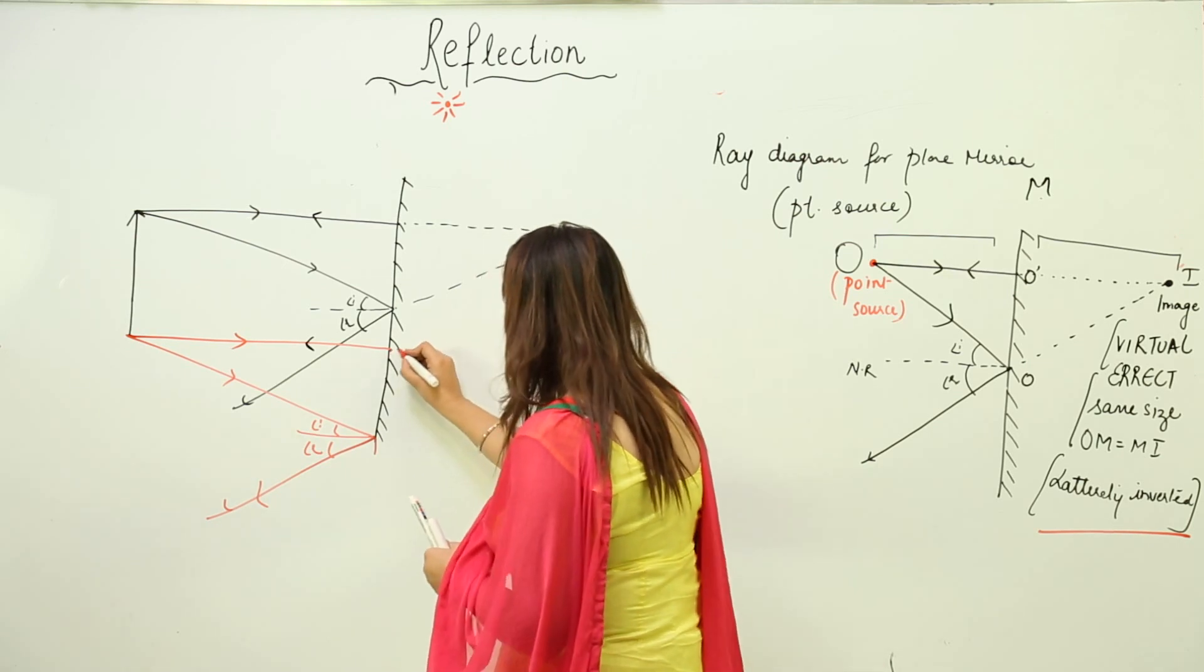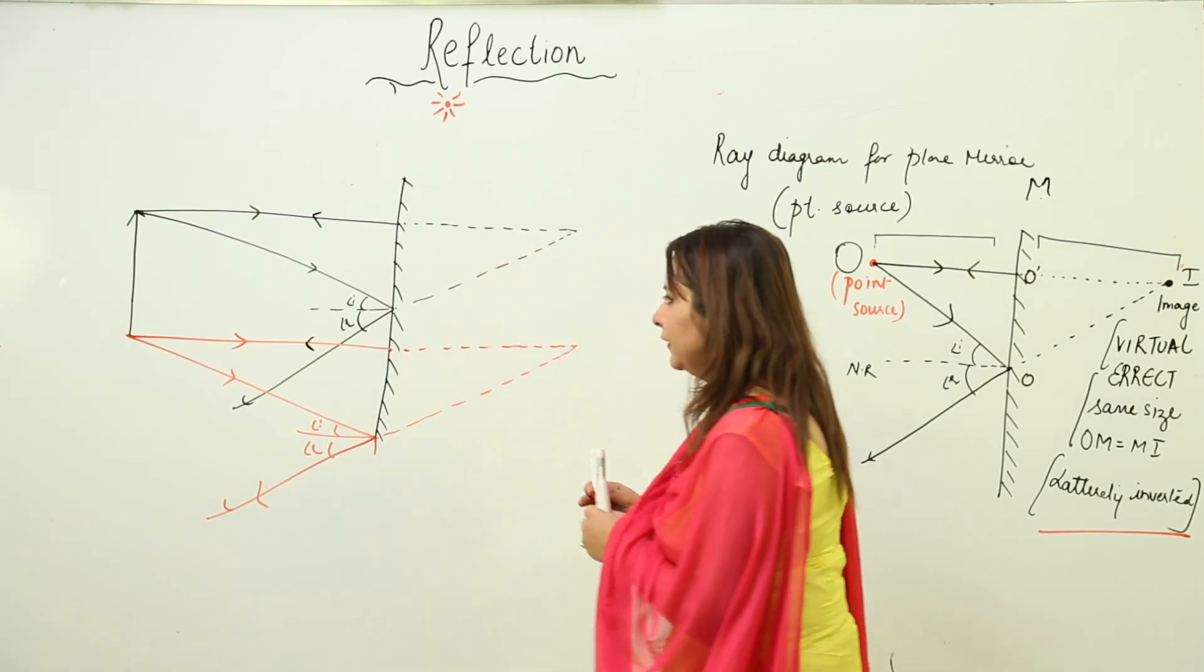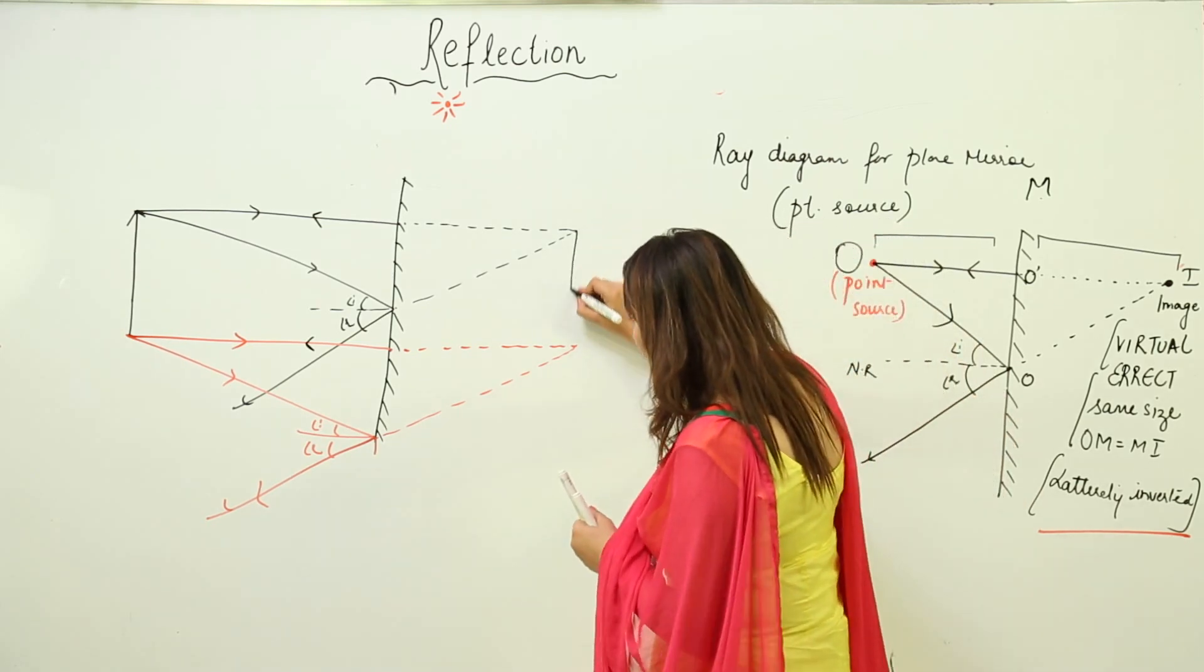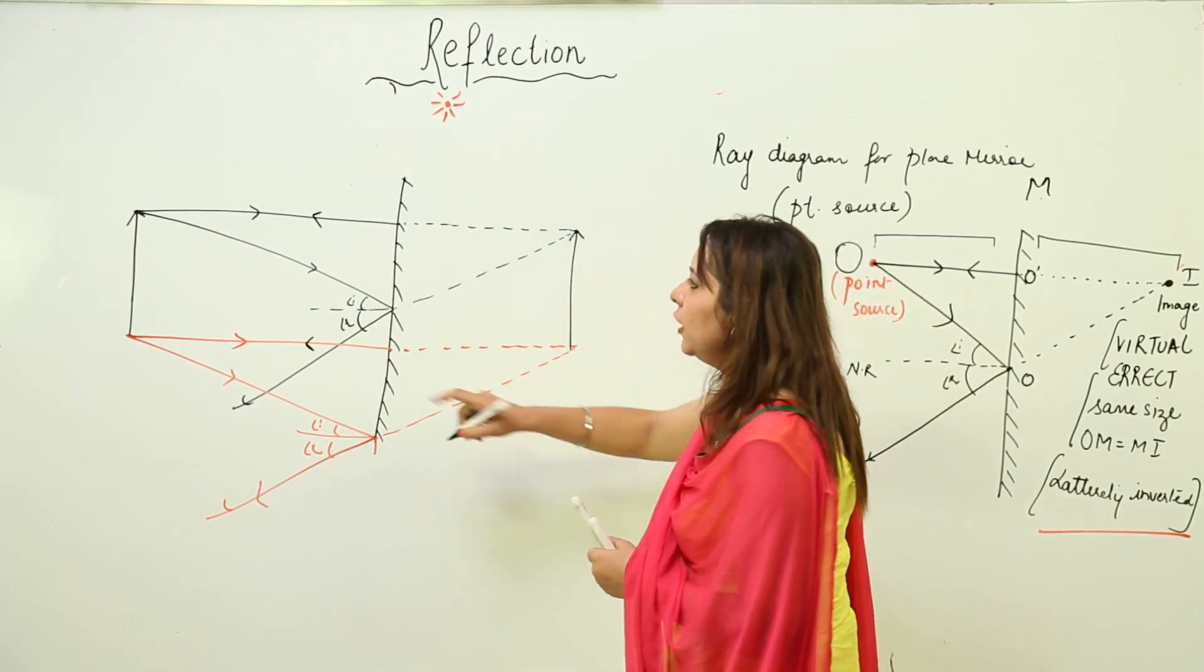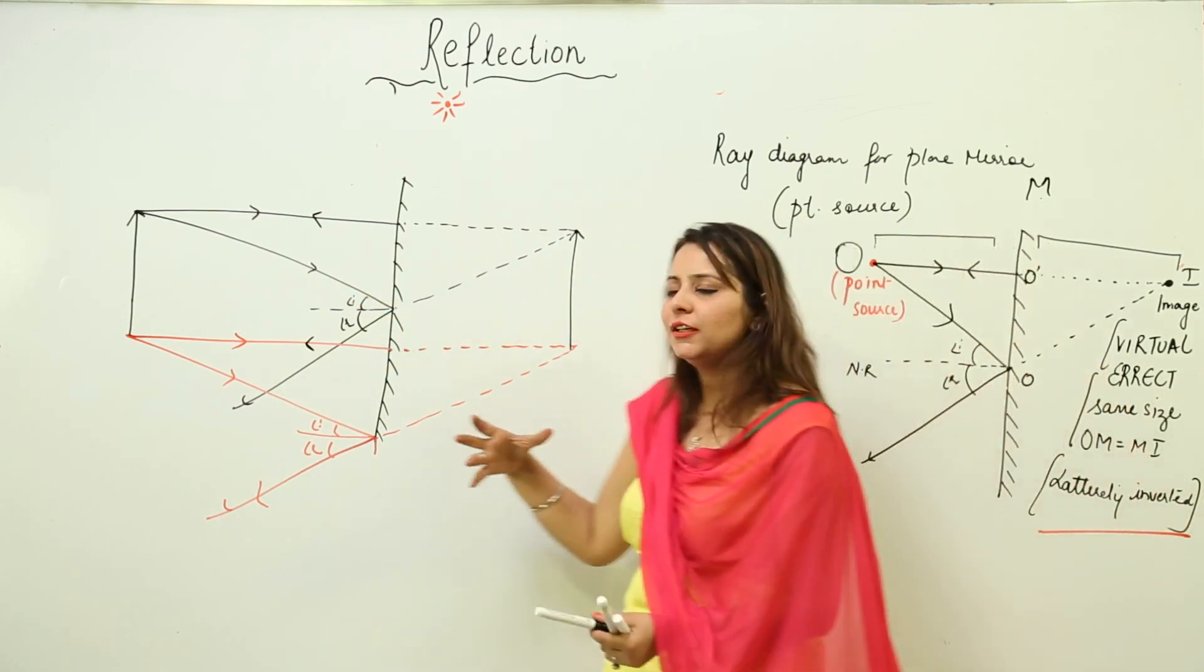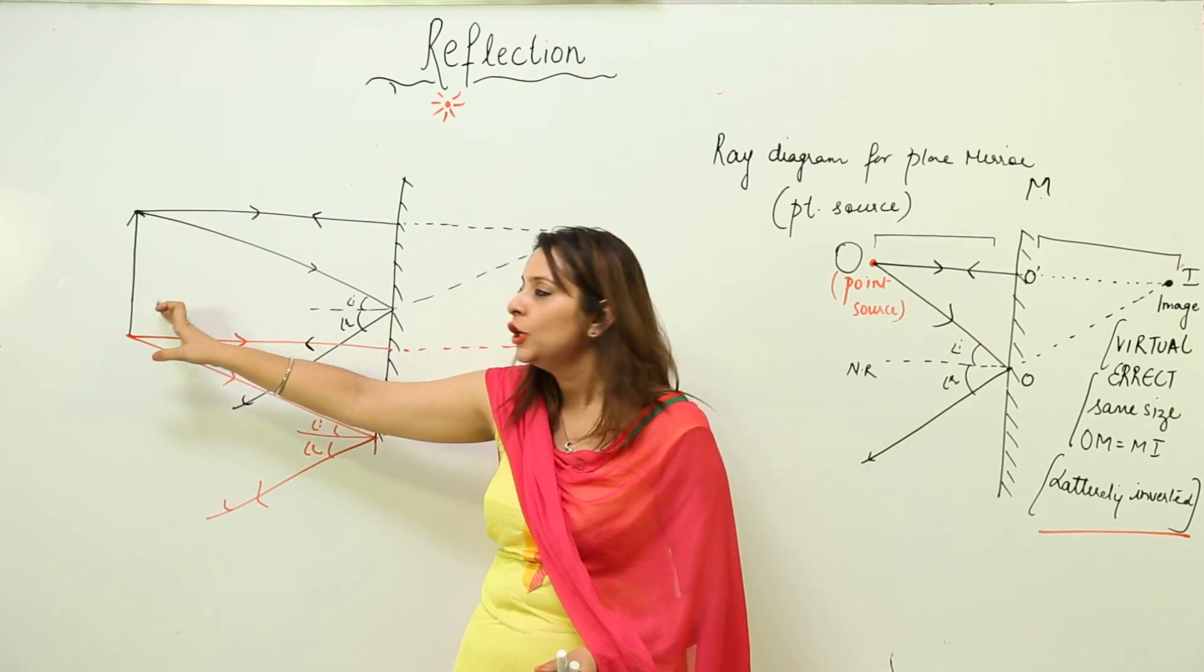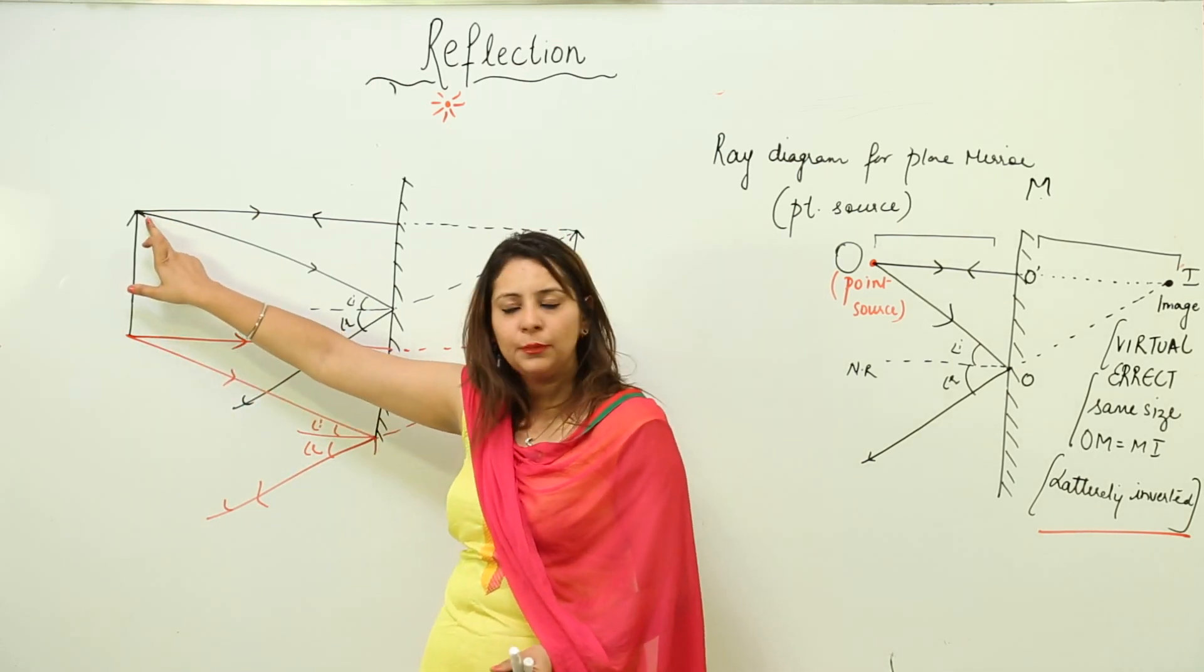For the red one, do the same manner. Just join these two points, and this is your image for the finite object. I think you got it, because it's not easy to draw the light rays coming from all these points.